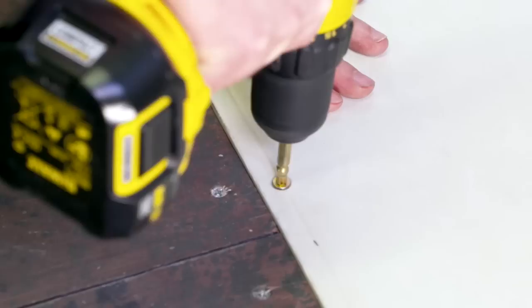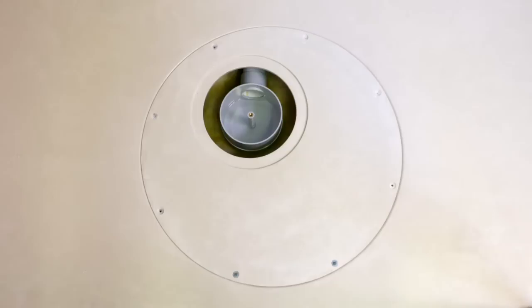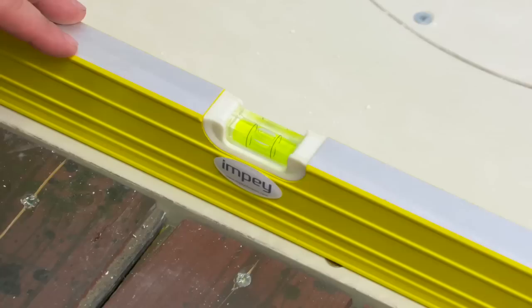Once a watertight connection is confirmed, you can begin to secure the deck into the floor by inserting the wood screws provided into the pre-drilled pilot holes. Continue the same process with the large rotating drain plate, taking care that all screw heads are correctly countersunk and again checking that the deck remains level throughout the process.